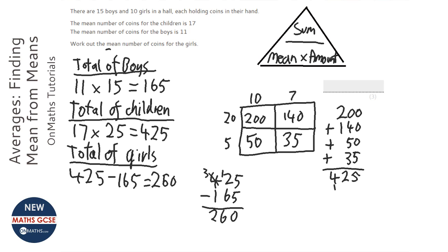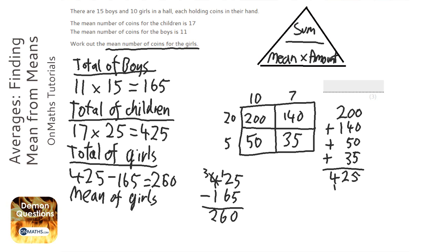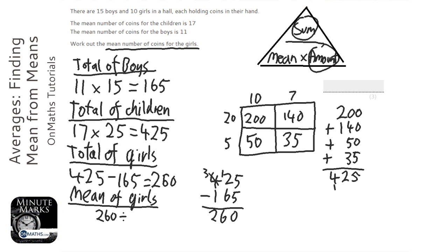But it's asked for the mean number of coins for the girls. So mean of girls. And we just use the standard sum over amount. So we know that they add up to 260, and we know that there are 10 girls in total. So that's going to be 26.